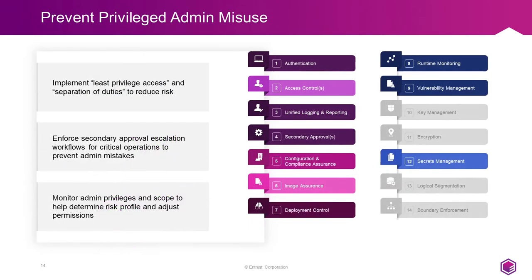Two core tenets of security are the principle of least privilege and separation of duties. Cloud Control accomplishes both through the use of role-based access controls and secondary approval workflows. Secondary approval workflows allow organizations to have greater control over the use of powerful administrator privileges by forcing virtual administrators to acquire an additional level of approval before completing a sensitive operation that could be detrimental to the virtual infrastructure — for example, powering off a critical VM during business hours. These capabilities also help organizations better understand and monitor admin privileges, determine current risk profiles, and adjust permissions accordingly.